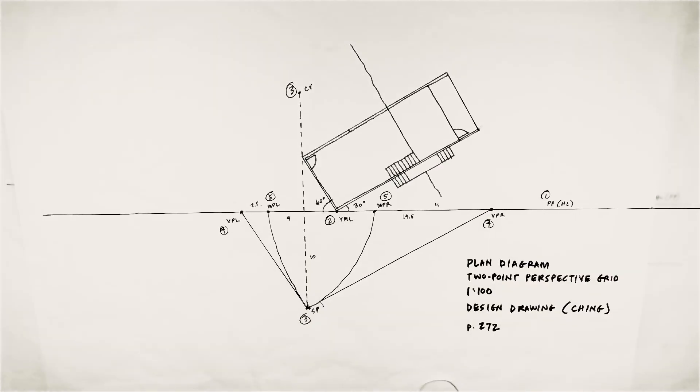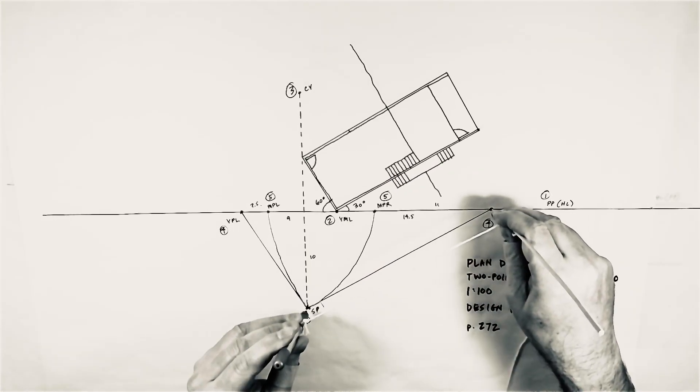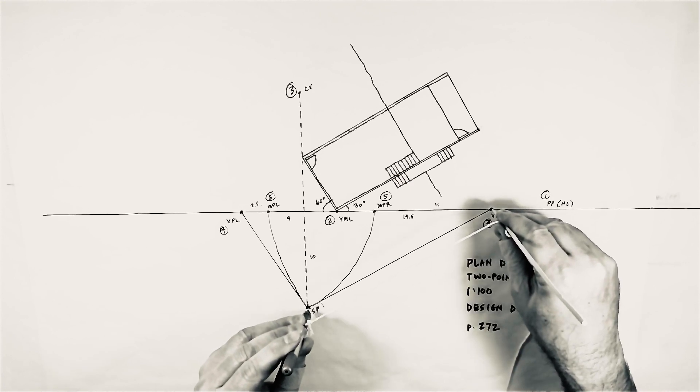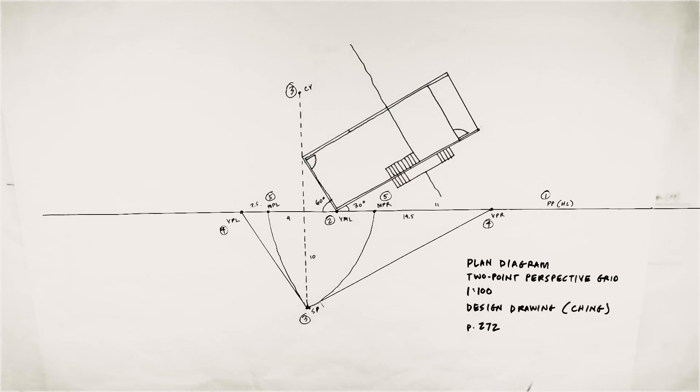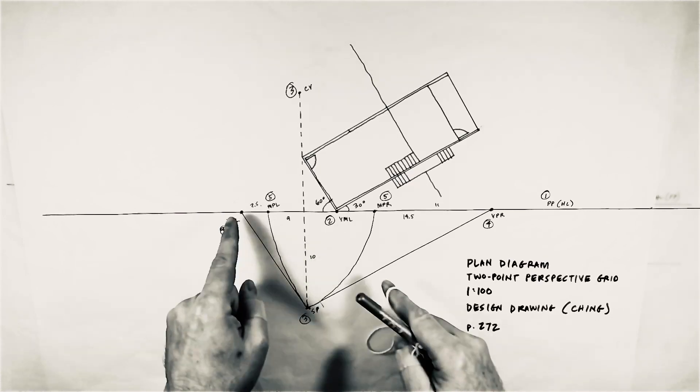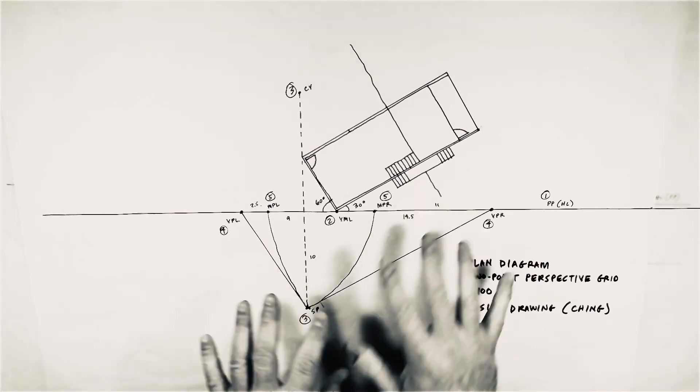Now, these measuring points to the left and the right are based on the arc, right, that you create with this radius away from each of these vanishing points to the left and the right. Works the same way, okay. And depending on the angle of your vanishing points and the depth of that station point, those will change, but they'll always be relatively the same.